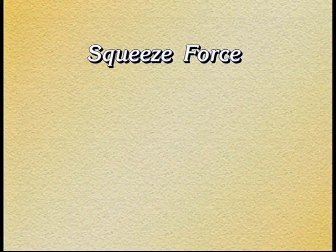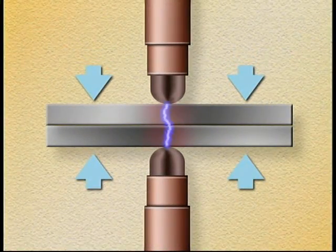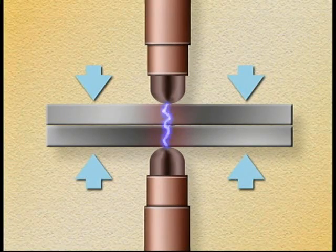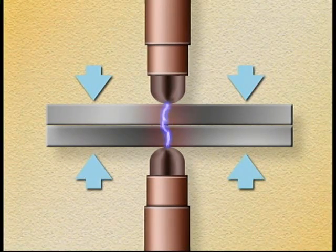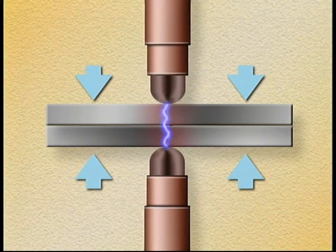Squeeze force in resistance spot welding works differently than you might expect. By increasing the force, you are bringing the surfaces of the parts into closer contact. This reduces the resistance level in the metal stack and causes less weld heat to be produced.